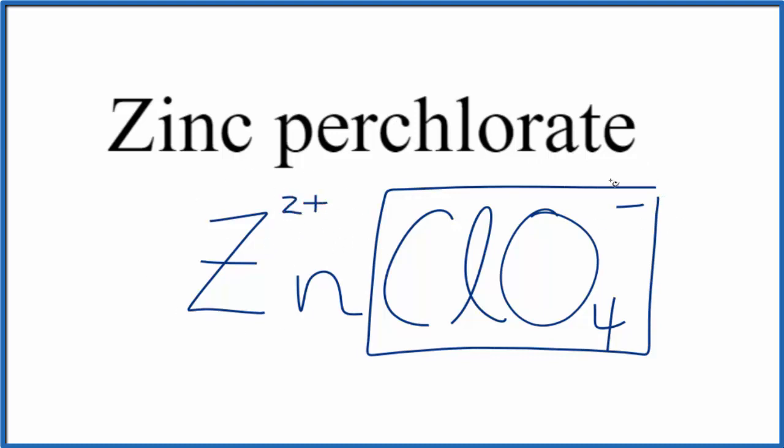Because of that, we need these charges to add up to zero to give us a net charge of zero, since zinc perchlorate is neutral. It doesn't say ion after it.